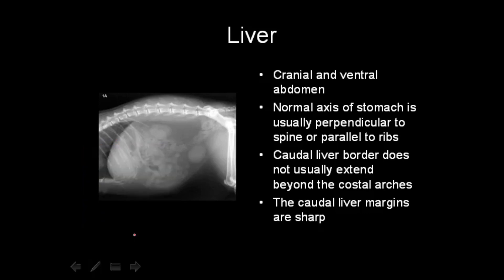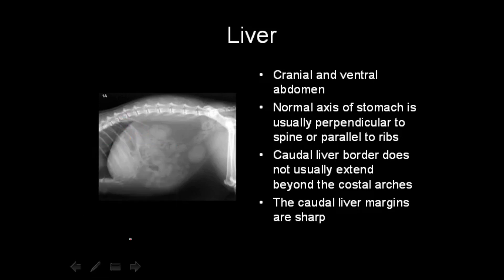The measurement we can use is the gastric axis, drawing a line from the fundus to the pylorus. This should be from vertical to the spine up to parallel to the ribs. So we draw a line from the fundus to the pylorus — that is the gastric axis — and this angle should be from vertical up to parallel, which is usually considered normal.